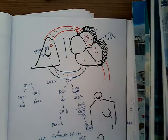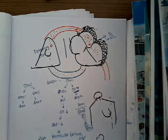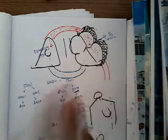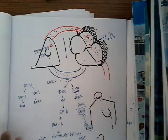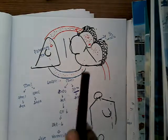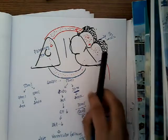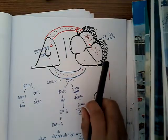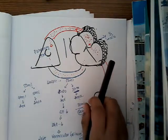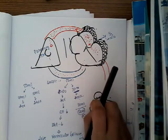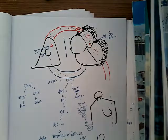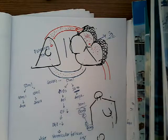If it is moderate, sometimes it can be accompanied by some arrhythmias which will lead to palpitations. Only if it is associated with some arrhythmias will there be palpitations. Otherwise, most cases are asymptomatic.